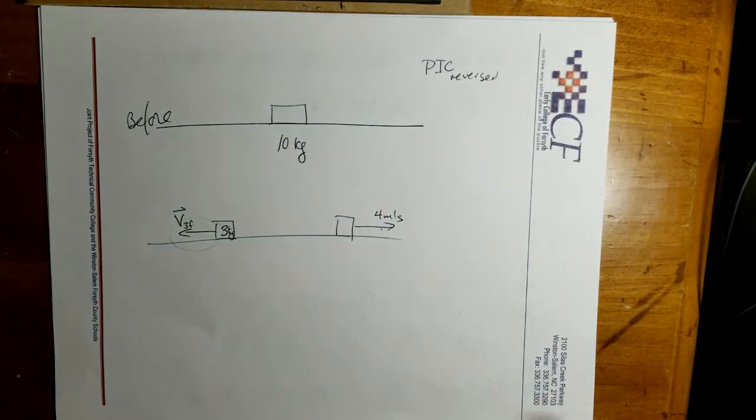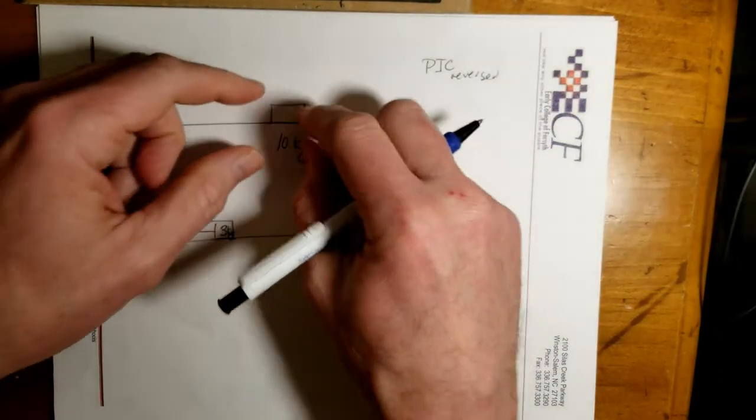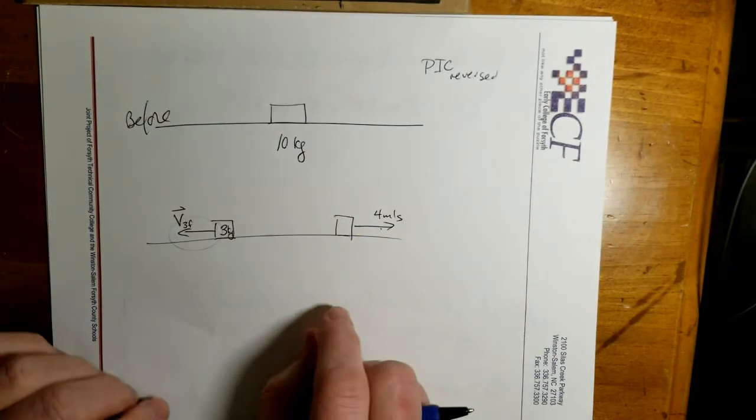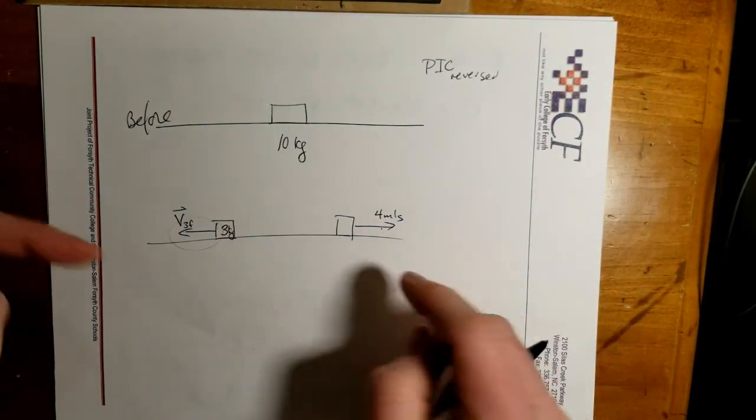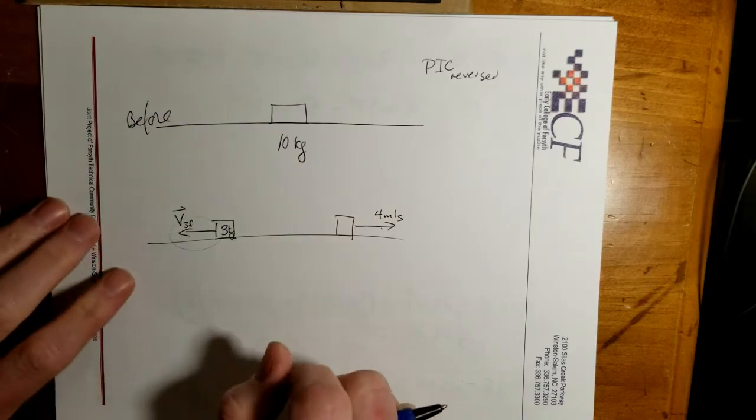Because if you've thought about this as a film, and you have this box here, it explodes, it's going in opposite directions. Well, if you just reverse the film, you have these two pieces coming towards each other, and then connecting and stopping.